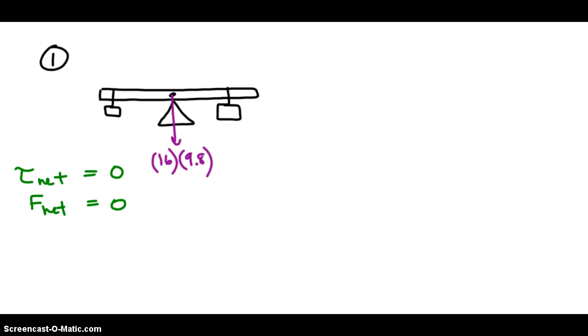What other forces are on our seesaw? The problem says that there's a 4 kilogram block hanging 2.5 meters to the left. That's what's pulling down. So it pulls down with its gravity. The force that it exerts on the seesaw is just mg.